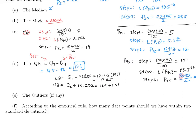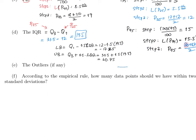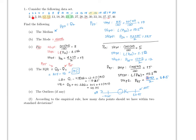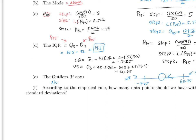The upper bound = Q3 plus 1.5 times IQR = 31.5 plus 1.5 times 19.5 = 60.75. So anything between -17.25 and 60.75 is acceptable. Looking at the list: no values are less than -17.25 and no values are greater than 60.75, so there are no outliers.